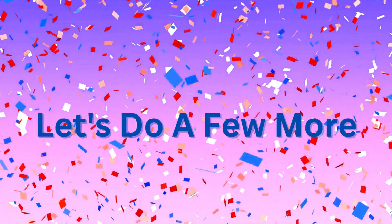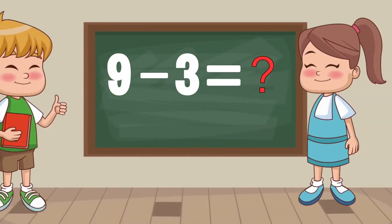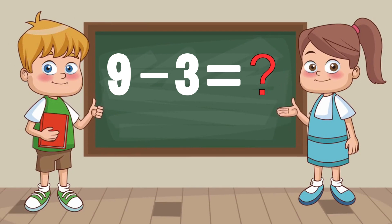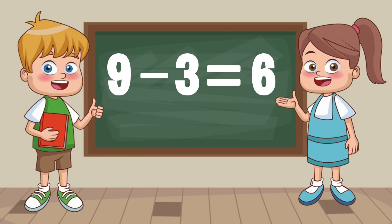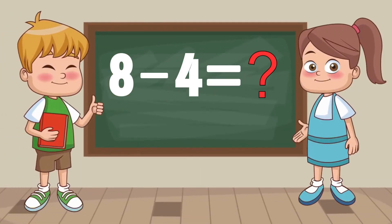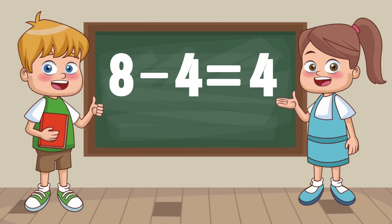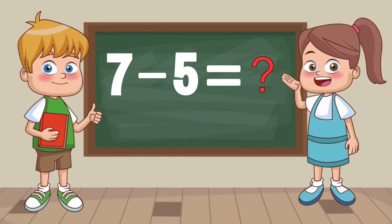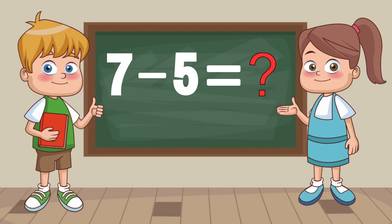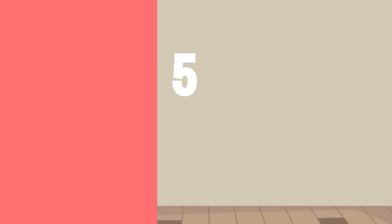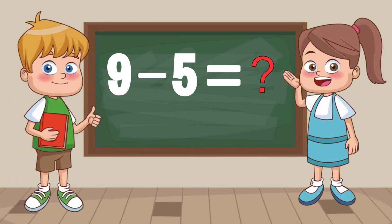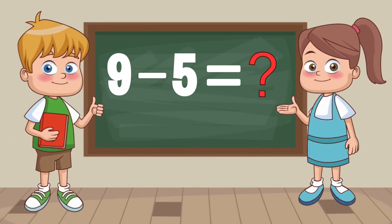Great going! Let's do a few more. 9 minus 3 equals... 4. 8 minus 4 equals... 4. 7 minus 5 equals... 4. 9 minus 5 equals... 4.